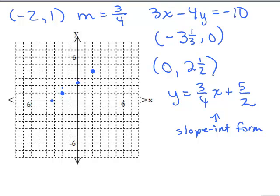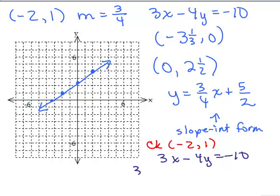Connecting the dots, you're going to get the graph of the line. The last thing to check is that the ordered pair negative 2, 1 is on the line we stated as the equation. So let's double check that on 3x minus 4y equals negative 10. Putting in negative 2 for x and 1 for y gives you negative 6 minus 4 equals negative 10. Yeah, it checks out.